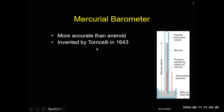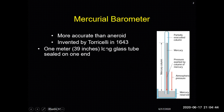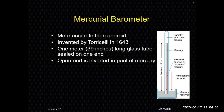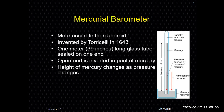The mercury barometer was invented in 1643. The tube is about 39 inches — approximately one meter — long, and is sealed on one end. The open end is inverted into a pool of mercury. The height of the mercury column changes as the atmospheric pressure changes.